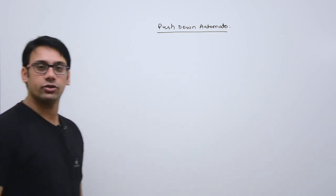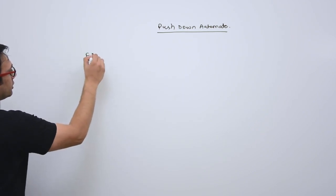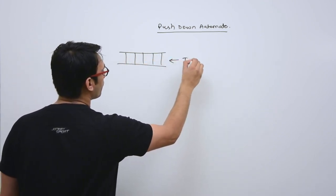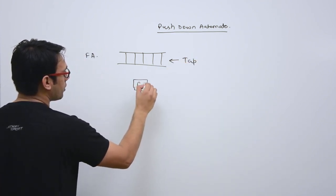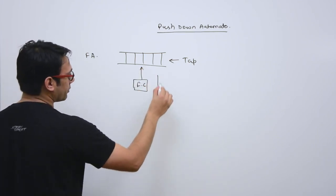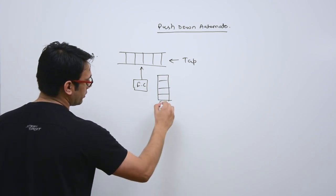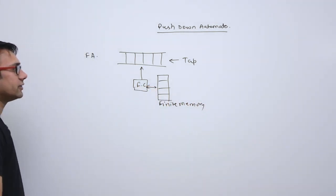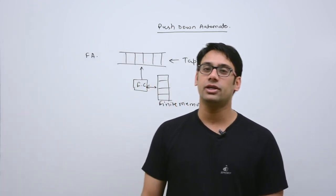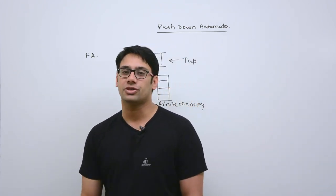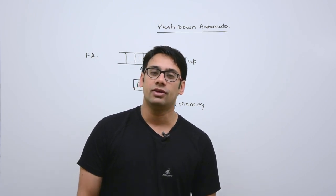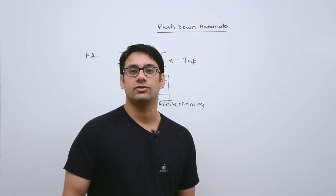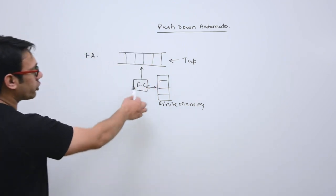When you studied finite automata, the structure was like this: we were having a tape, a finite control, a read-write head, and a finite memory. This memory is finite. This finite automata can communicate with this finite memory. When we say finite memory, that means we can only store a limited number of information. That is why, for languages where we have to store strings like a^n b^n, those kinds of strings will not be able to be stored in finite automata if the length of the string is infinite.